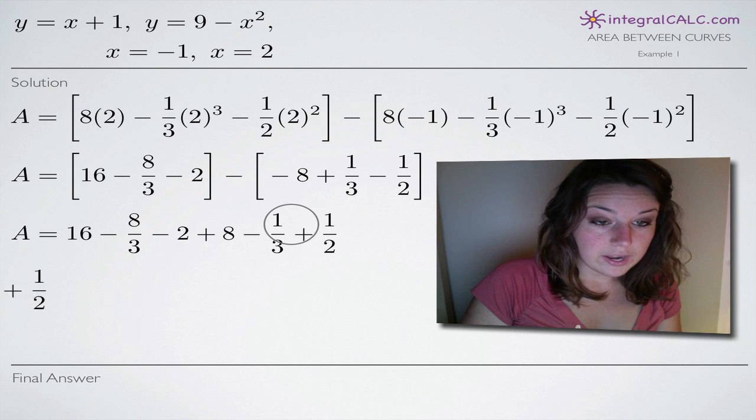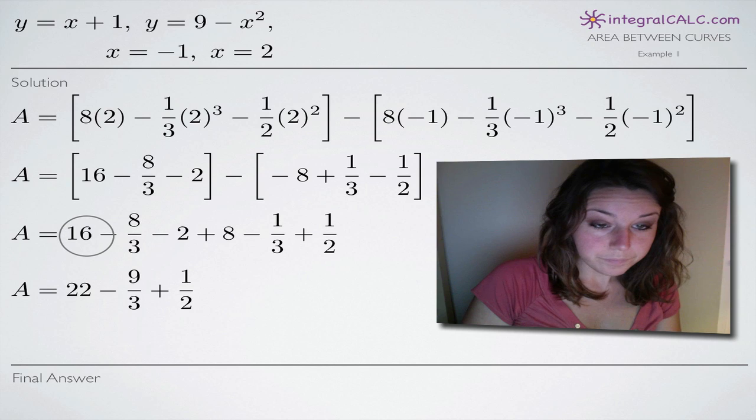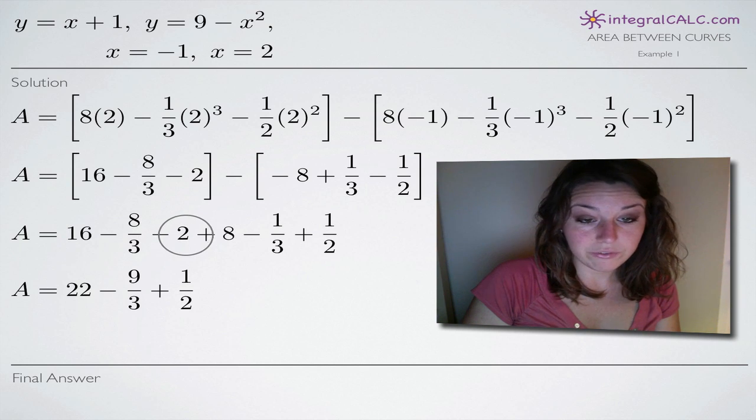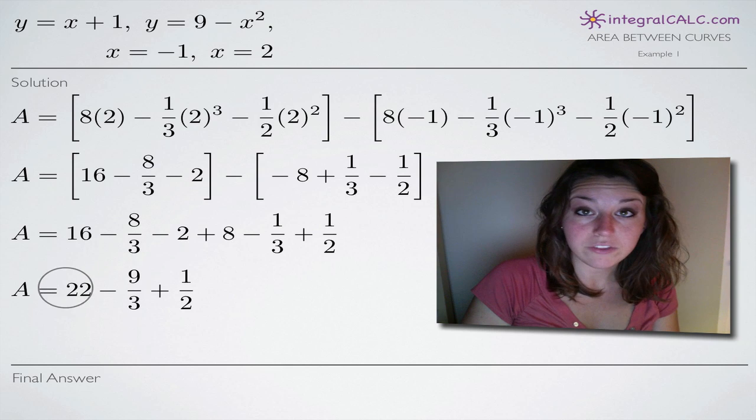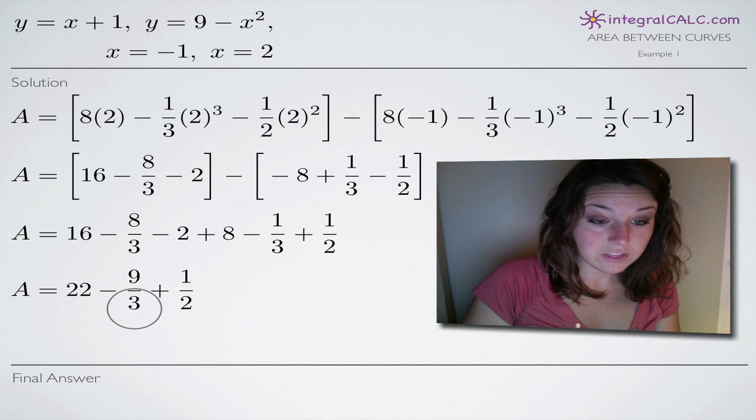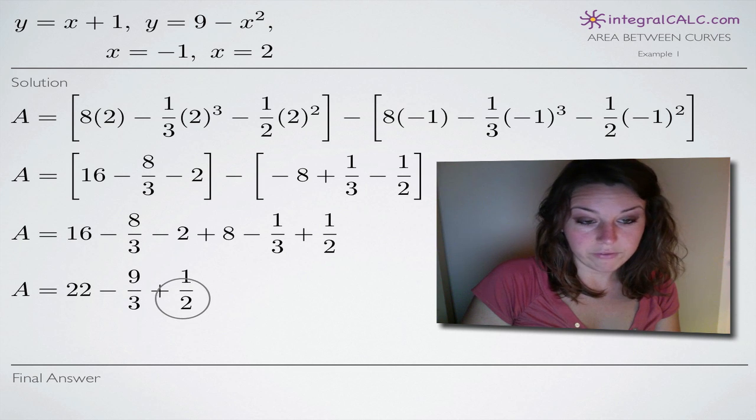So now if we combine the 16, the negative 2, and the 8, 16 minus 2 gives us 14 plus 8 gives us 22. We have a negative 8 thirds and a negative 1 third gives us a negative 9 thirds, and we leave the 1 half alone. These are just basic simplification steps.